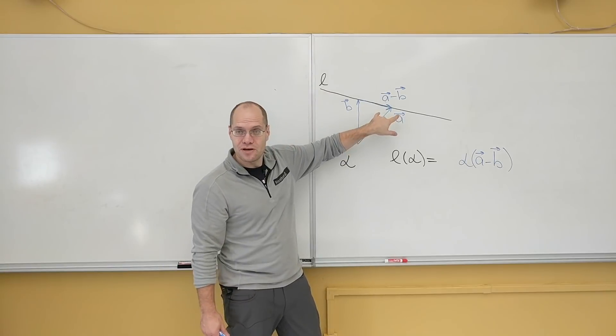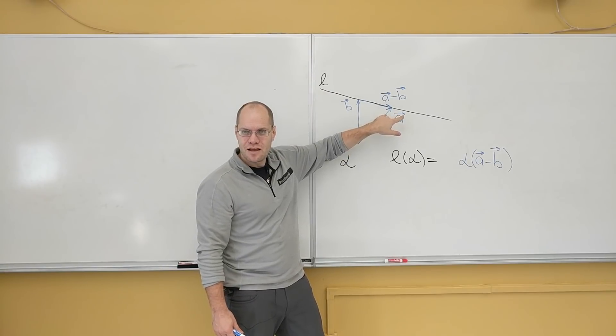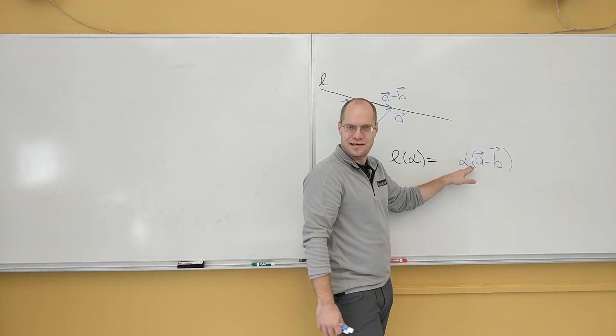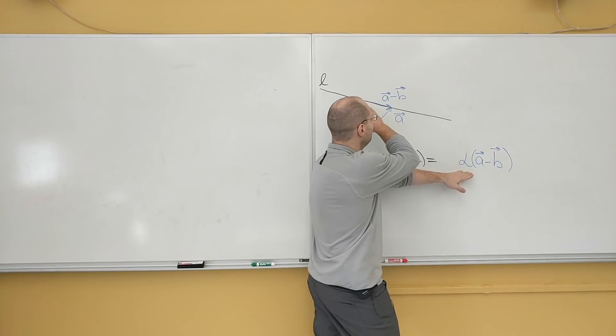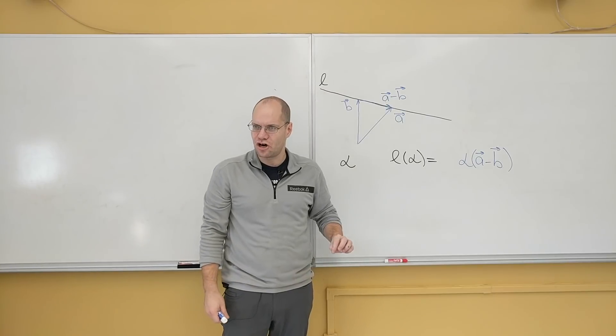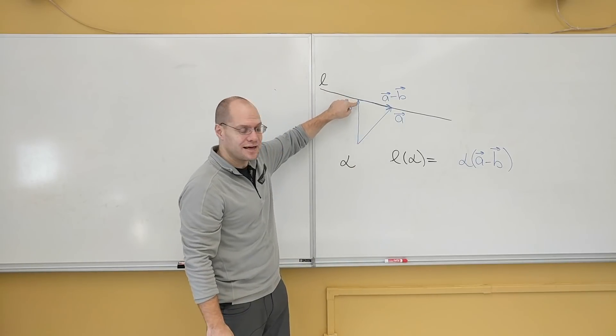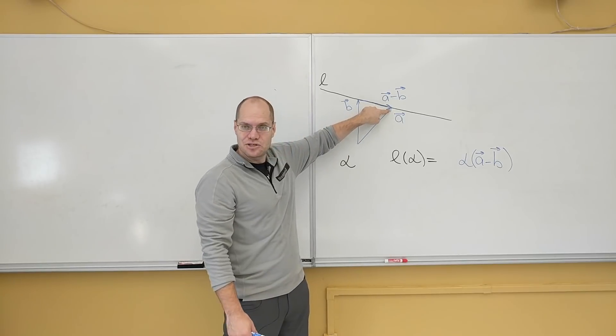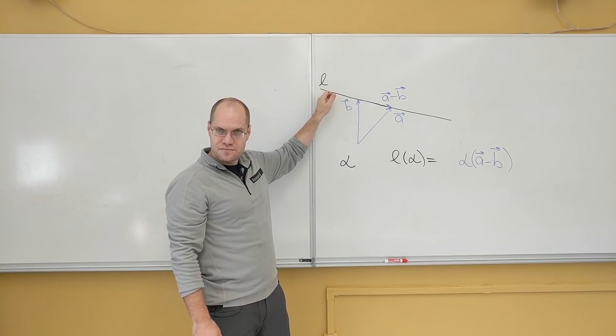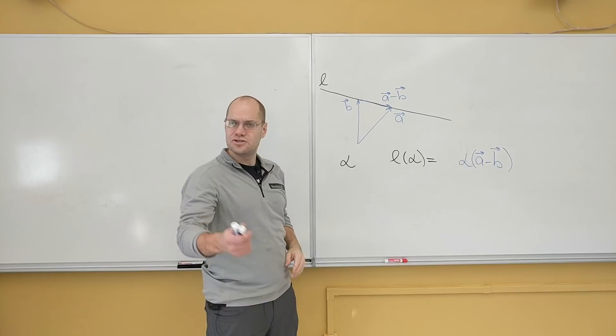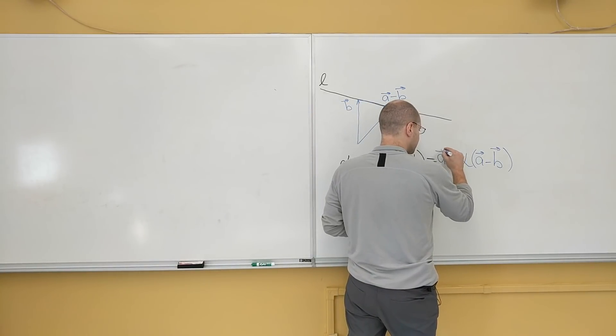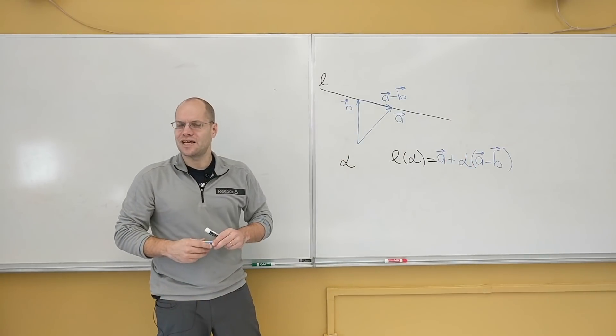A minus B points in the direction of the straight line. And alpha multiplying that vector helps you travel left and right along that line. Positive alpha takes you in this direction. Negative alpha takes you in this direction. Now it's just a matter of deciding where to start. And you need to start somewhere on the line. So you can either add A to it. Or you can add B to it. Or in fact, you can add any vector that's on the line. So it's A plus alpha times A minus B.